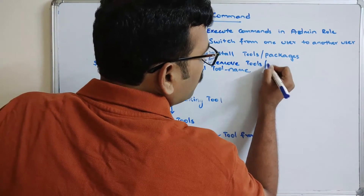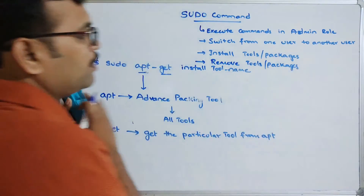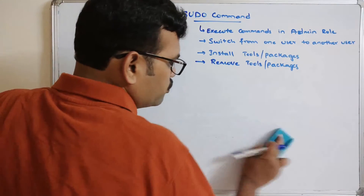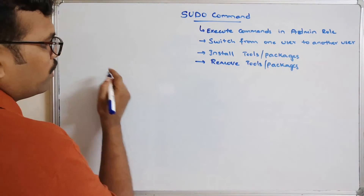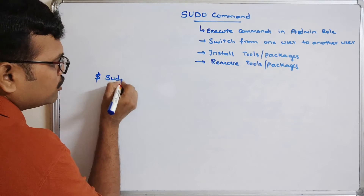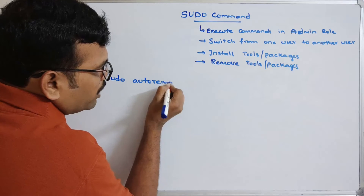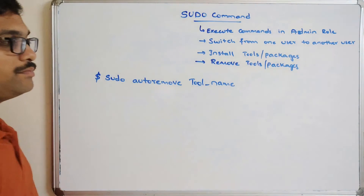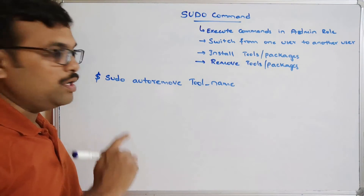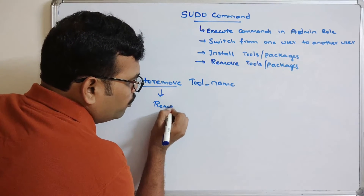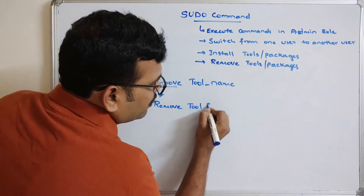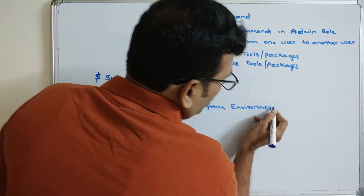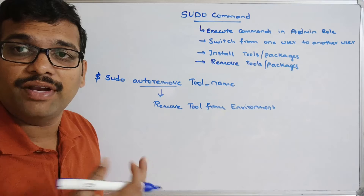To remove tools or packages, the command is: sudo autoremove [tool name]. This autoremove command will remove — that is, uninstall — the complete tool from the environment automatically.